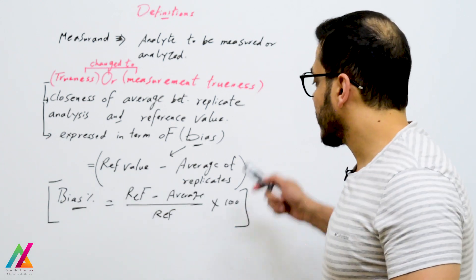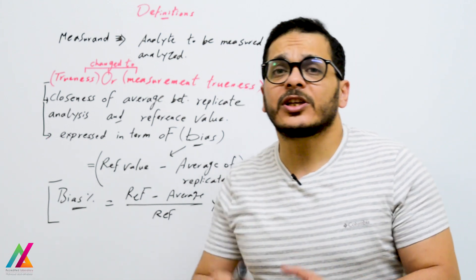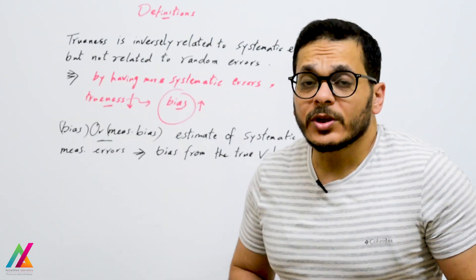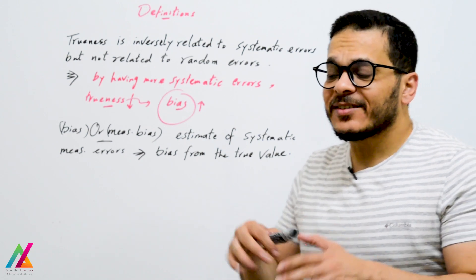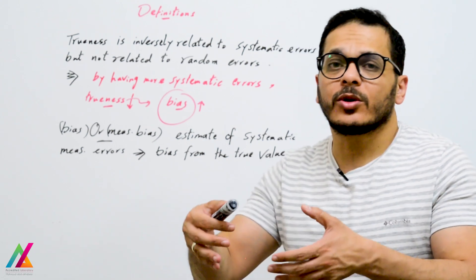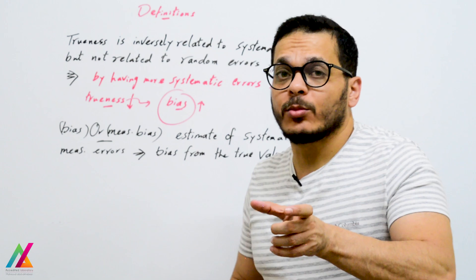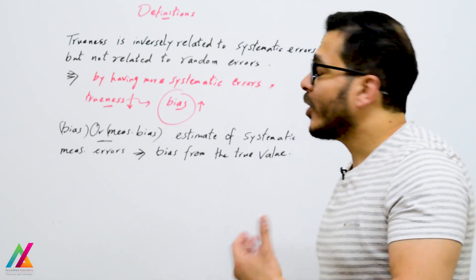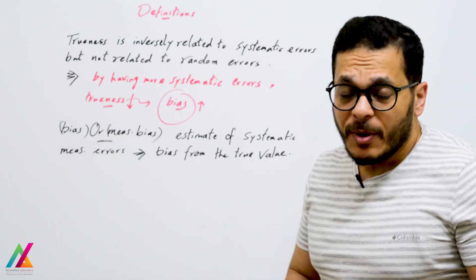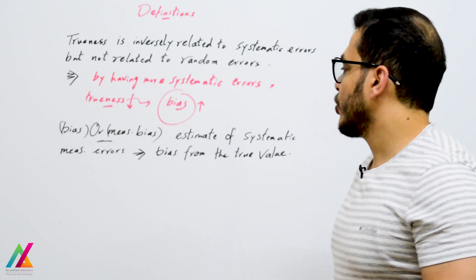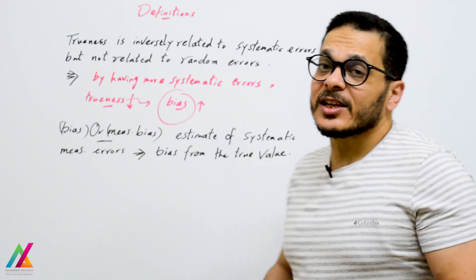In microbiological analysis there is no assigned or reference value, so trueness is inversely related to systematic errors but not to random errors. By increasing systematic errors, trueness will decrease — meaning bias will be very high and the method will not give you the true value, so the method will not be valid. Bias, or measurement bias, is the estimate of systematic measurement error — the deviation from the true value.